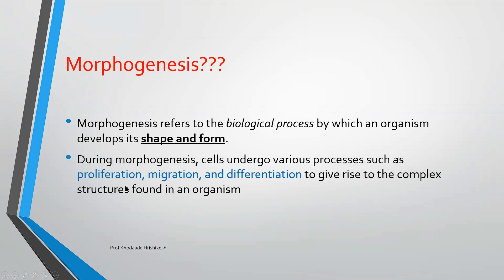Morphogenesis involves cells showing proliferation, meaning the number of cells increases. Cells also show movement from one location to another to some extent in plants — that is migration — and differentiation, meaning a particular cell performs a particular function. All these processes come together to create shape and form in an organism. For example, formation of leaf, root, or flower — that is morphogenesis, or morphological shape appearance.